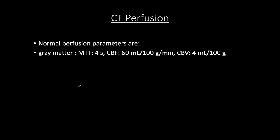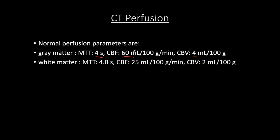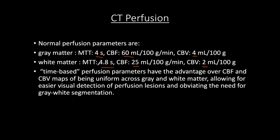Normal CT perfusion parameters: in gray matter, cerebral blood flow is approximately 60 mL/min/100g and cerebral blood volume is approximately 4 mL/100g. In white matter, blood flow drops to about 25 and volume drops to about 2 — roughly half. Mean transit time is similar between gray and white matter at about 4.8 seconds. Even in normal perfusion, there is a roughly twofold difference in CBF and CBV between gray and white matter. When a perfusion defect exists, the difference must be even greater. Time-based parameters like MTT are very helpful for detecting even small perfusion deficits.